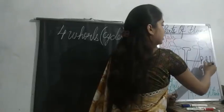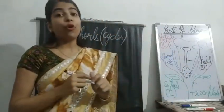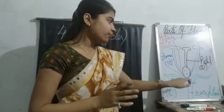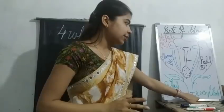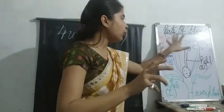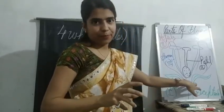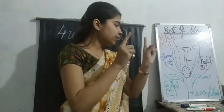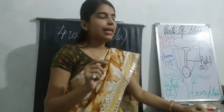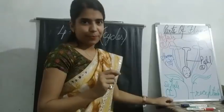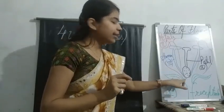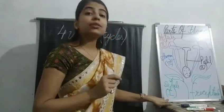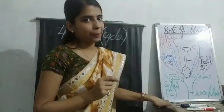Moving further inside to the innermost whorl — the fourth whorl of the flower — you find the pistil. The receptacle holds all four whorls. First whorl: sepals, the greenish leaf-like structure; second whorl: the bright, colorful petals.